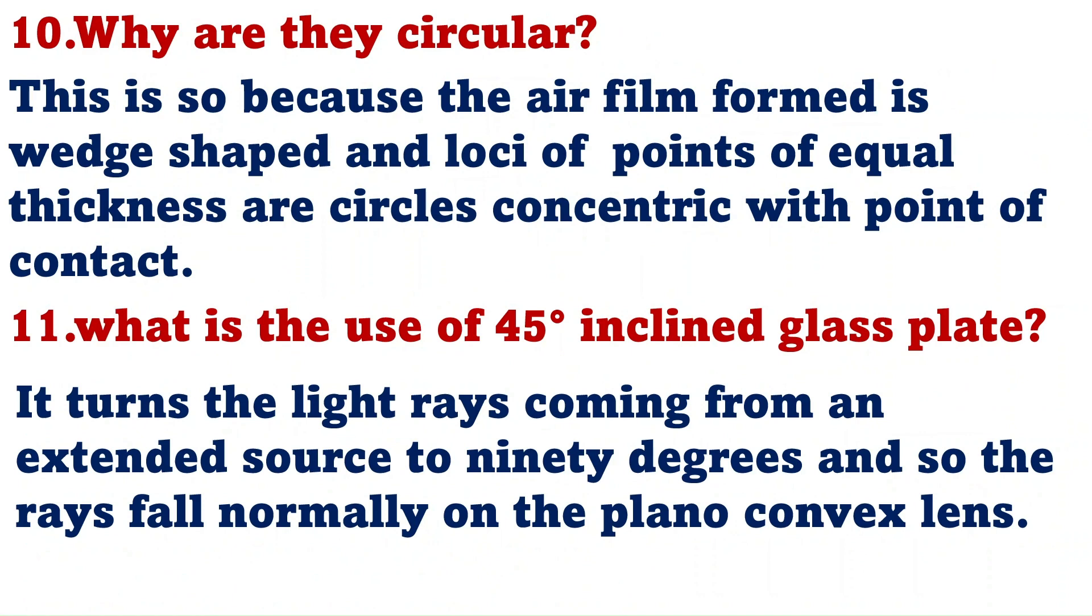Why are they circular? That means why the Newton rings are always circular? This is because the air film formed is wedge-shaped and locus of points of equal thickness are circles concentric with point of contact.